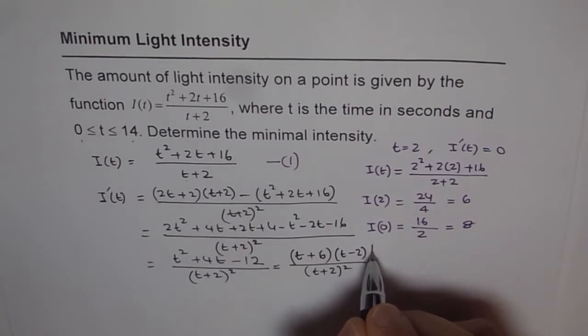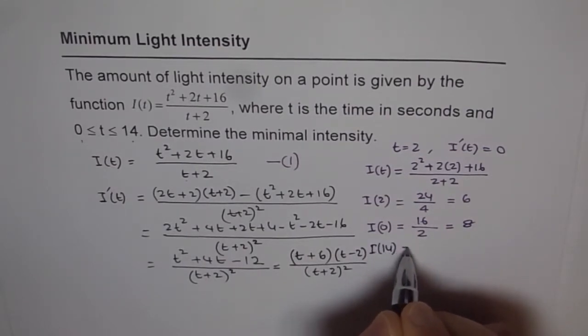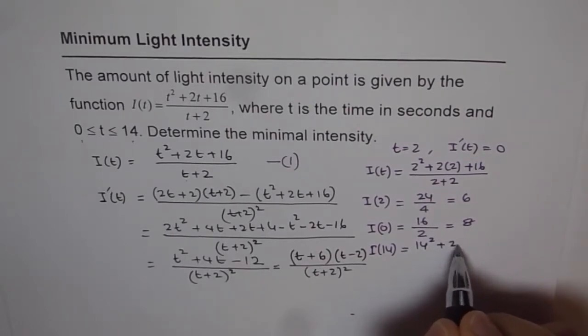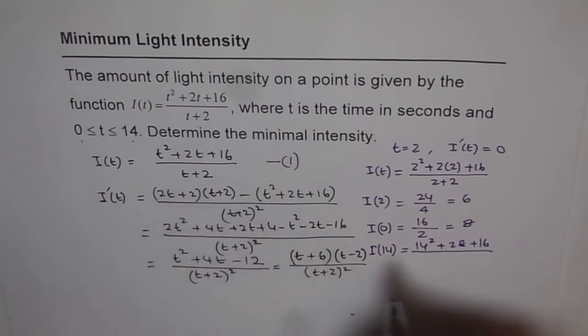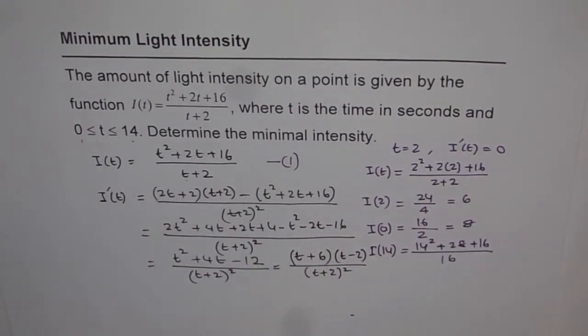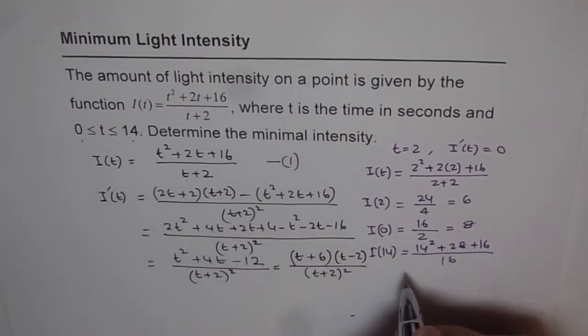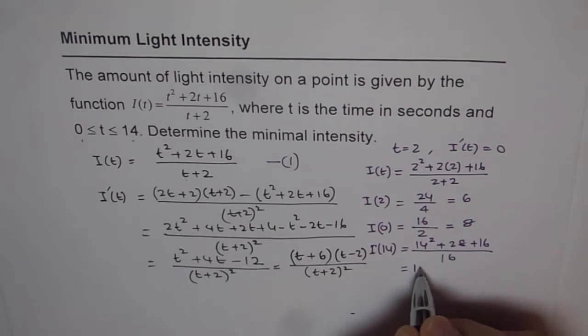How about 14? So I(14) is equal to, let us put 14 here. So we get 14² + 2 times 14 is 28 + 16 over 14 + 2 is 16. So we will use calculator to find this answer. So we have 14² + 28 + 16 equals to 240 divided by 16 equals to 15. So we get here equals to 15.